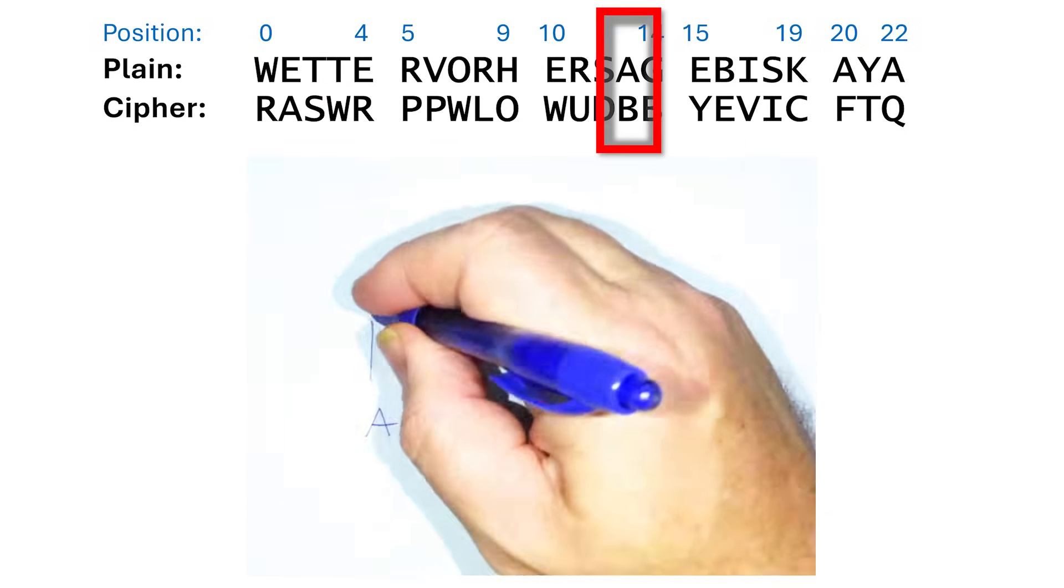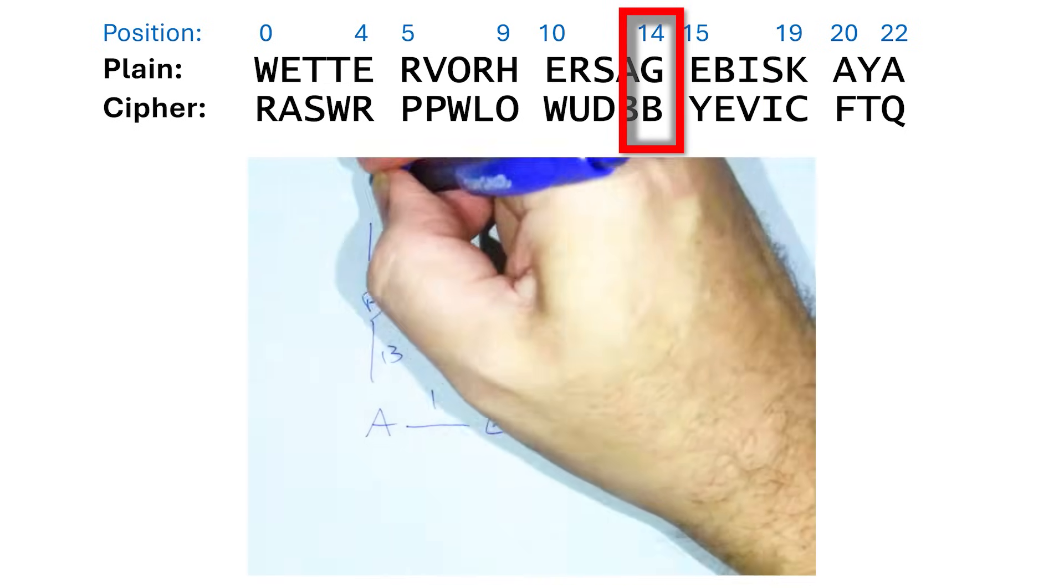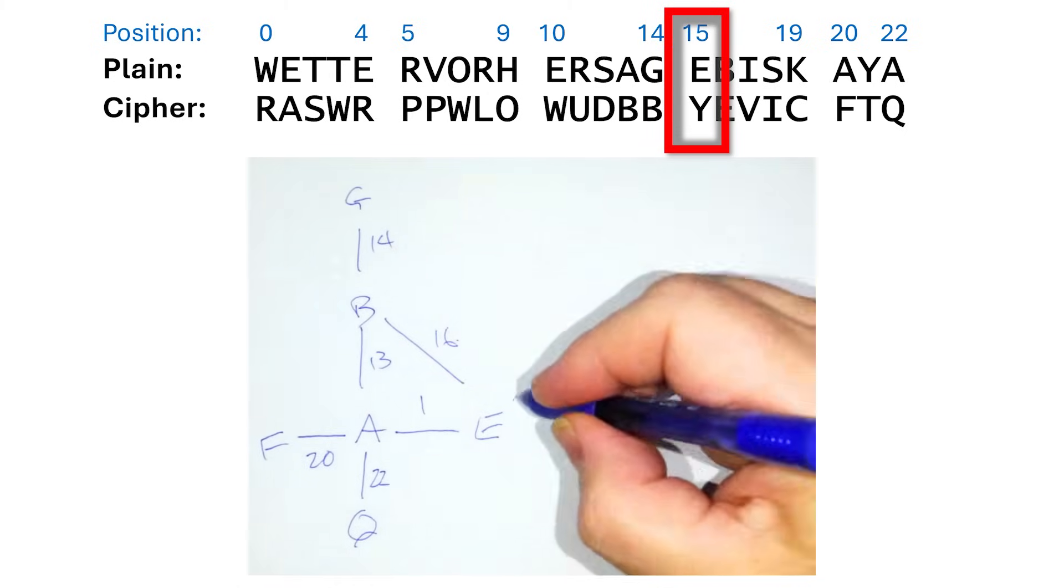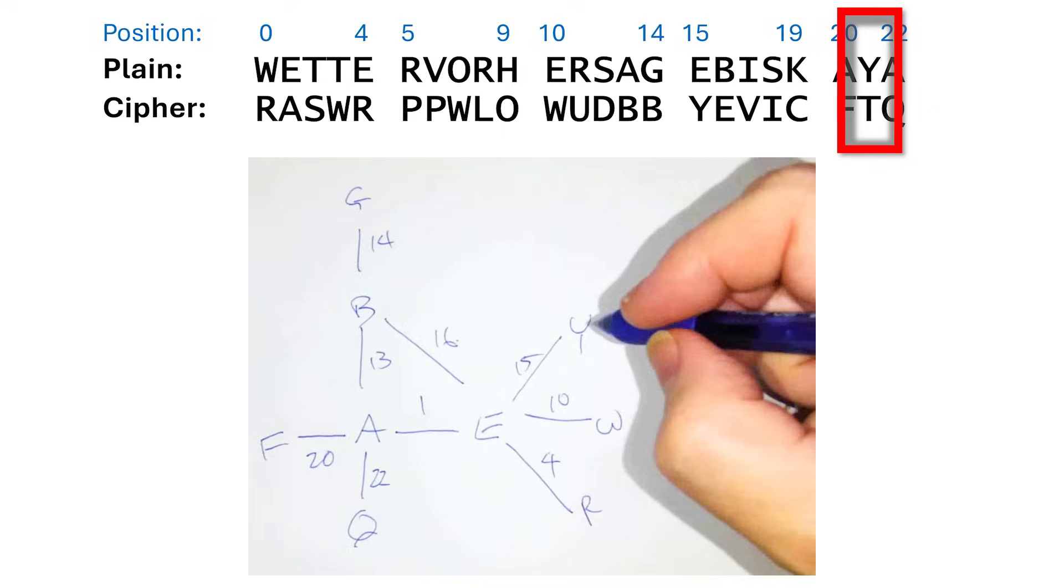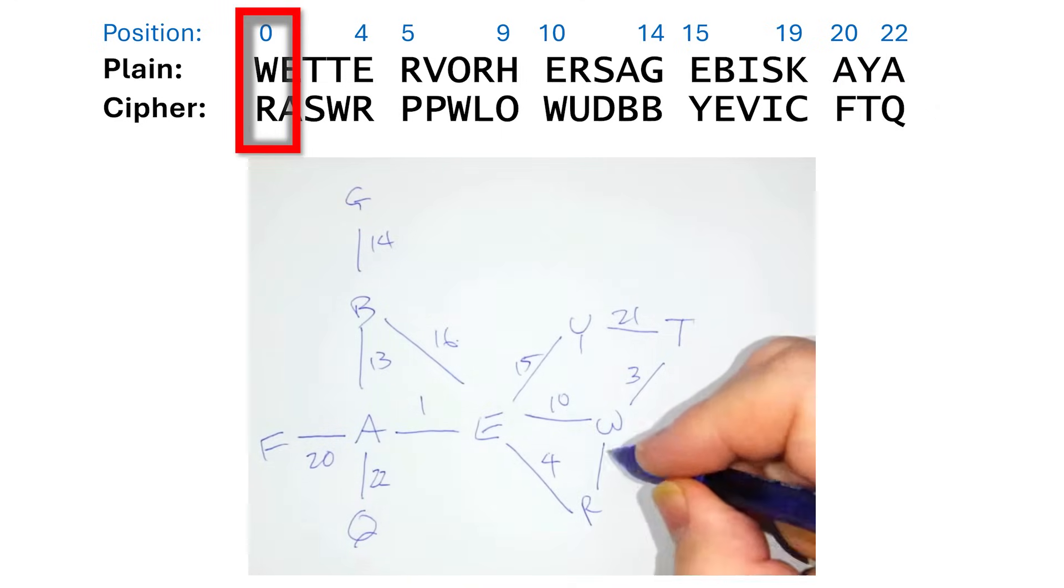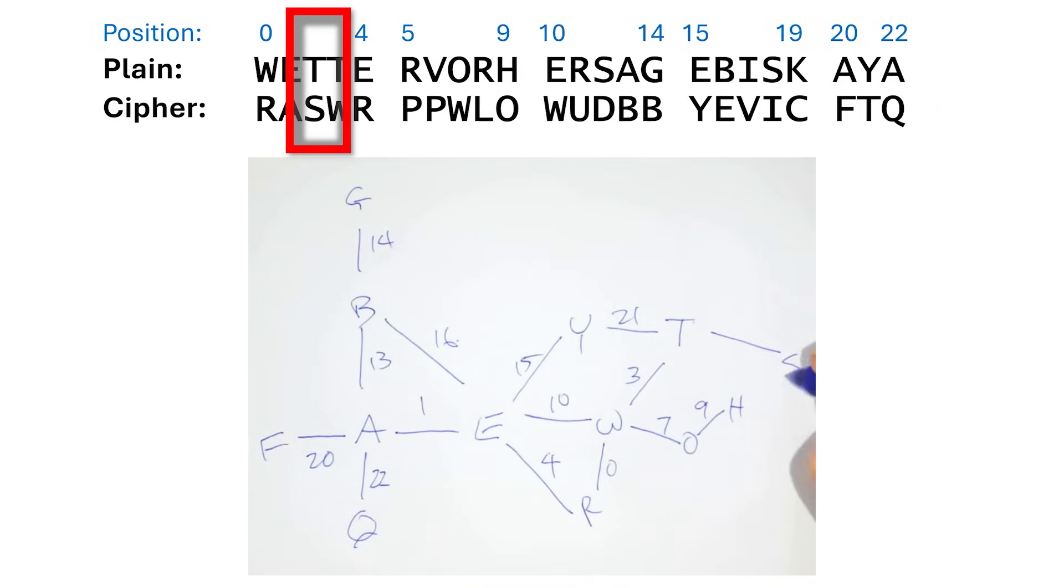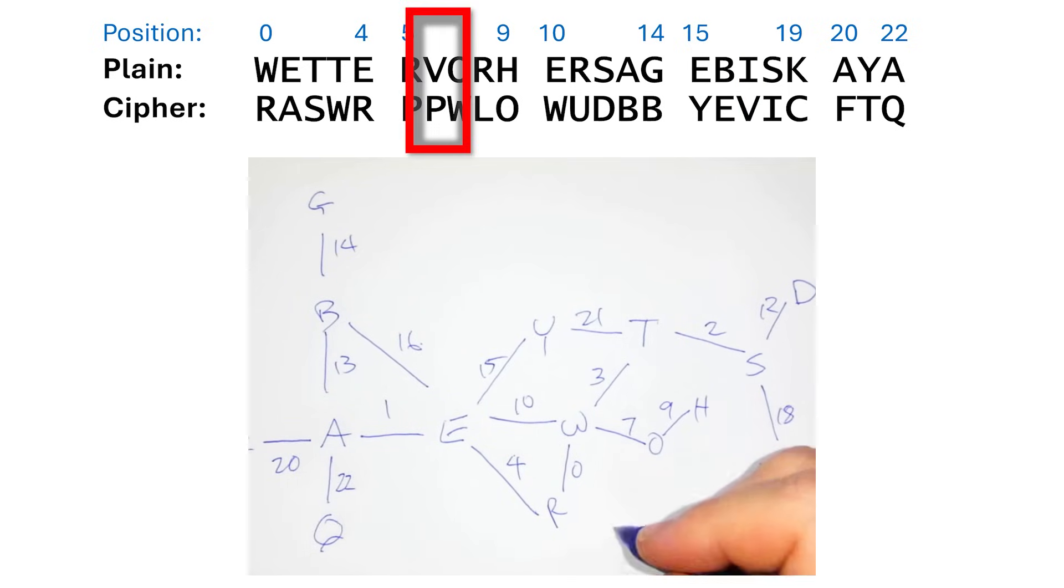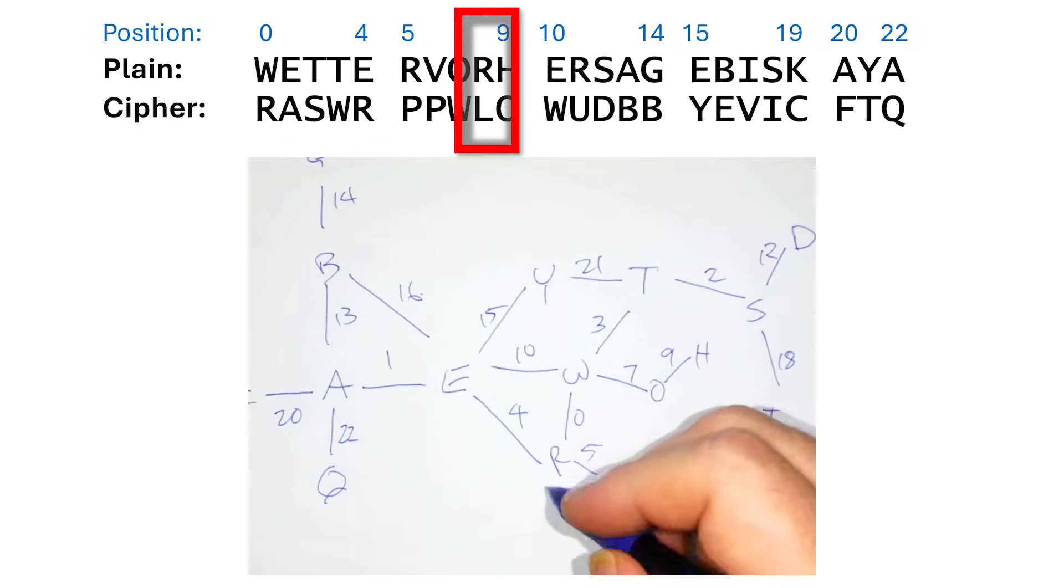We go through the process again of creating a menu. This captures the connection between any given plain text character and the cipher text it generates. We also need to map the rotor position where this occurred.